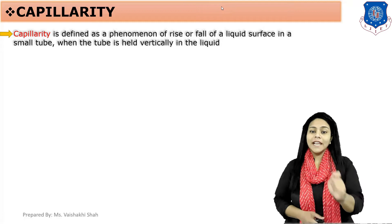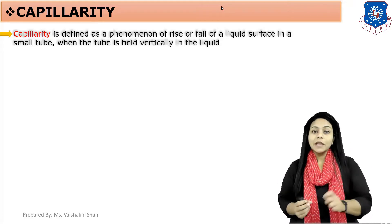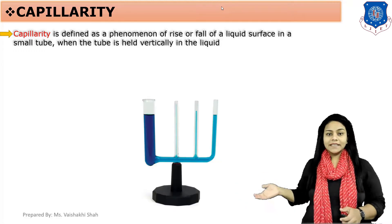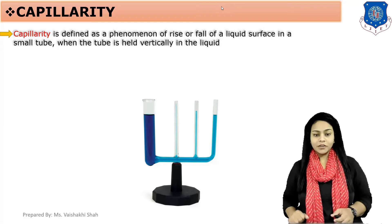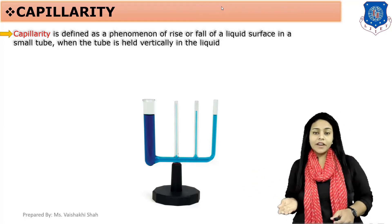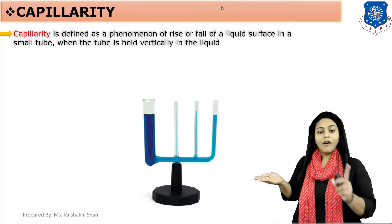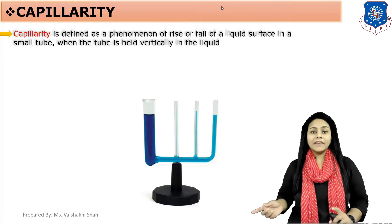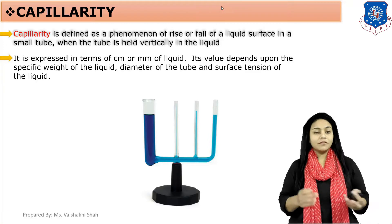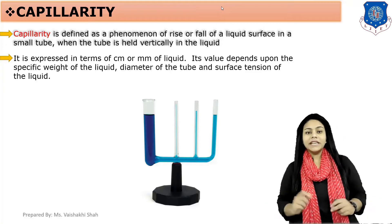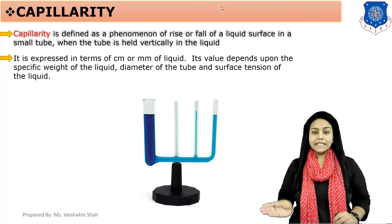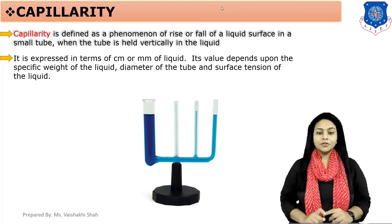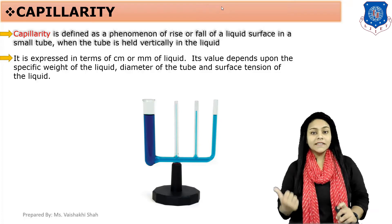Capillarity is defined as the rise or fall of a liquid in a small tube when the tube is immersed vertically in the liquid. As you can see, there are different diameter glass tubes here. The liquid rises in these glass tubes. This rise or fall of liquid is called capillarity, expressed normally in centimeters or mm. The value of capillarity depends on the weight of the liquid, diameter of the glass tube, and surface tension of the liquid.